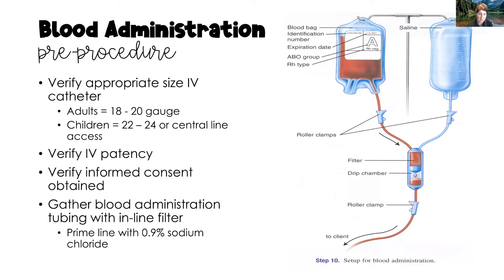Verify the appropriate IV catheter size: 18–20 gauge for adults, 22–24 gauge for children. Blood can also be administered through central line access. Ensure the IV is patent — flush it and check for signs of phlebitis or infiltration. Blood administration requires informed consent. Then gather all supplies including the Y-set tubing with the inline filter.